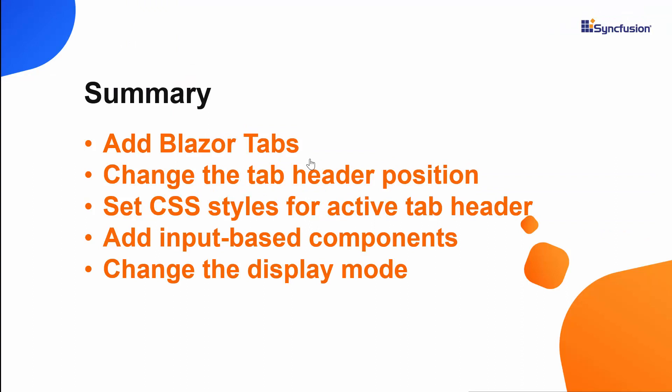Now let me make a quick summary of what we have seen so far. We have seen how to create a Blazor project using Visual Studio 2019 and added a Syncfusion Blazor tab component in the server app. Also, we have seen how to change the tab header position as well as how to set styles to the active tab header. Finally, we have also seen how to add contents using a template and how to set display mode to the tab component. If you would like to see the working of this example, you can download it from the GitHub link which I have shared in the description part below.